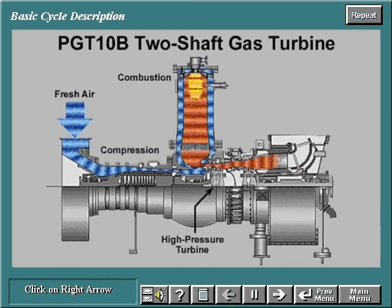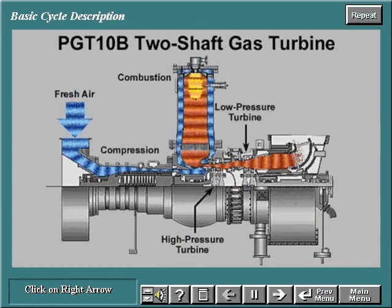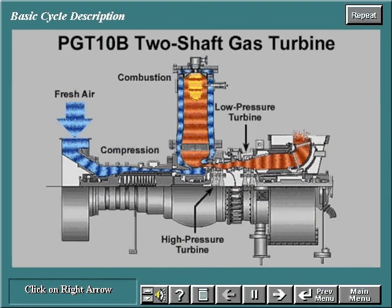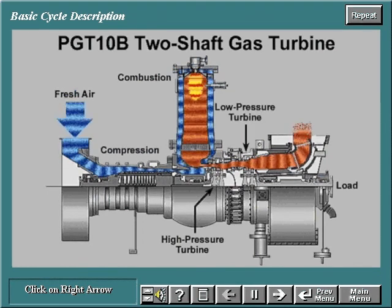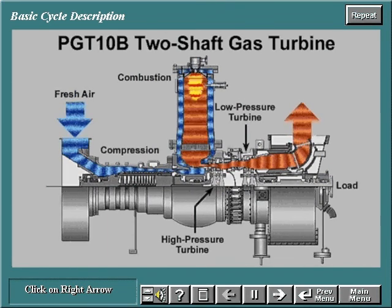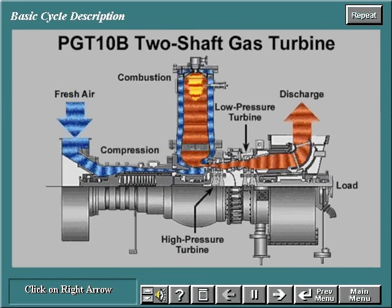The hot gas is further expanded through the low-pressure turbine that drives the load equipment. Finally, the combustion gases, now at a low pressure and temperature, are discharged into the atmosphere.